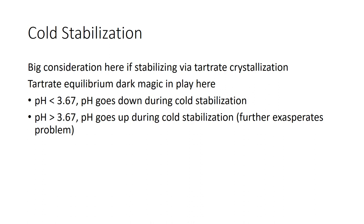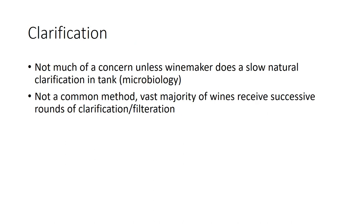Nearing the end with cold stabilization. This is a big consideration for boutique wineries that cold-stabilize in the traditional manner — getting the wine really cold to force tartrate crystals out of solution. Below pH 3.6–3.7, the pH goes down during cold stabilization. Above pH 3.6–3.7, the pH goes up during cold stabilization, which further exacerbates your high pH problem. During clarification, there's not much concern unless doing slow natural static clarification in a tank — keep things cold so microbes don't take hold. Frequent clarification usually happens rapidly through successive rounds of filtration.